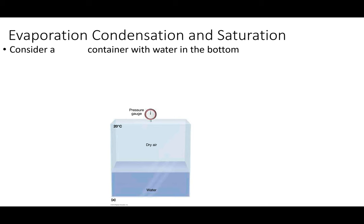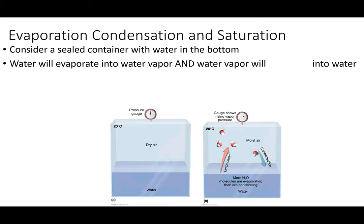Now picture I had saran wrap over the water — I remove it. Naturally, some of the liquid water particles have enough kinetic energy to break their bonds with their neighbors and become a gas. It'll do that for a while. We have three evaporations and one condensation, so notice the pressure gauge went up — we now have moist air.